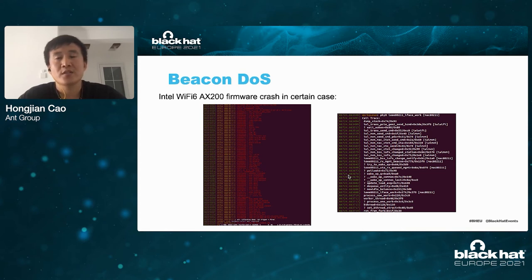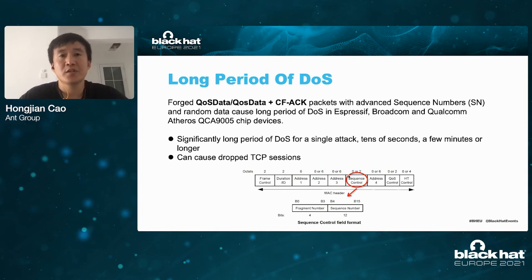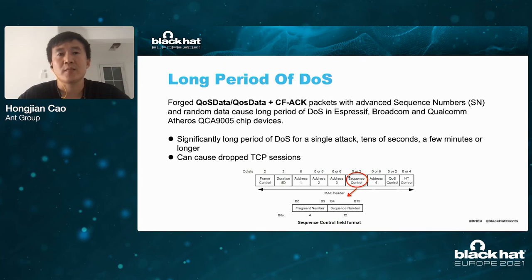The Intel AX200 firmware will crash in certain cases. The QoS data long-period DOS affects Broadcom, Cypress, and Qualcomm QCA9005 Wi-Fi chip devices. An attacker can attack a target device by sending a QoS data and CF-ACK packet with an advanced sequence number and random body data. Once the target device is attacked, its network connection will be disconnected for a period of time, and all network connections will be interrupted.